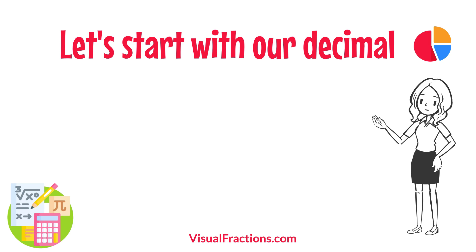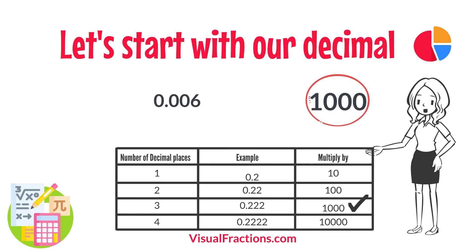Let's start with our decimal, 0.006. Notice there are three digits to the right of the decimal. This places it in the thousandths position.